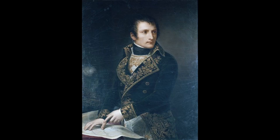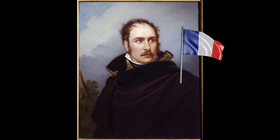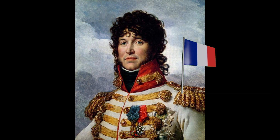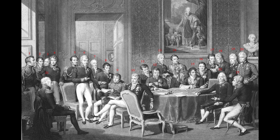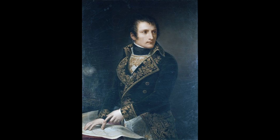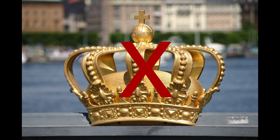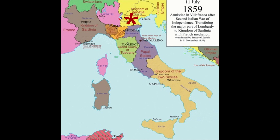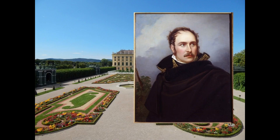Napoleon installed rulers in French-supported states, such as Eugène Beauharnais, Viceroy of the Italian Republic in 1805, and Joachim Murat, King of Naples in 1808. As Napoleon was defeated, the Congress of Vienna of 1815 saw Austria, Britain, France, Russia, and Prussia agree a long-term European-wide peace settlement which restored pre-Napoleonic powers and monarchies. This meant Italy was again largely governed by the Austrian Empire, the Habsburgs, and the Pope.